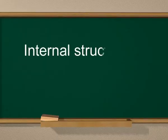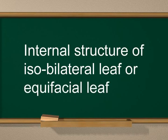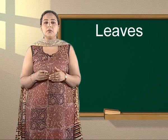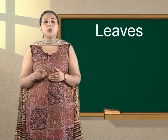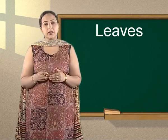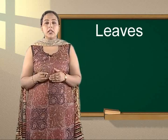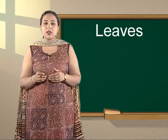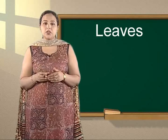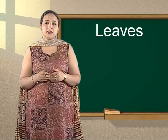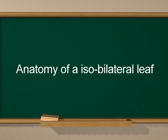Now we will study the internal structure of a typical isobilateral or equifacial leaf. In these types of leaves mesophyll is not differentiated — it is made of only spongy or palisade parenchyma, as in monocots. Most monocotyledonous leaves are isobilateral, but in some plants such as Canna, Lilium, Musa, etc., they are dorsiventral. The common example of an isobilateral leaf is the maize leaf.